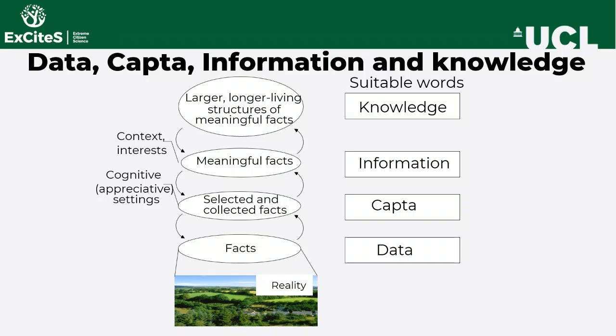Information is frequently understood as an organization of data in a way that makes it possible to make sense of it. Information can mean turning the data we have collected — what we just called CAPTA — into a table that allows us to examine changes throughout the day by marking different hours as an organizing aspect. Above information we have knowledge, which is the identification of common structure, patterns, rules, and other structures within the CAPTA we have collected.